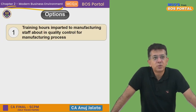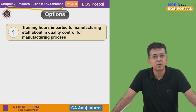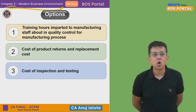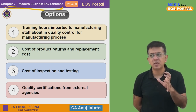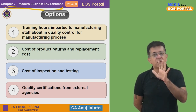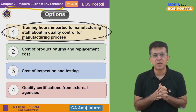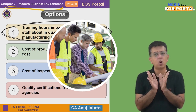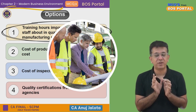Option 1: Training hours imparted to manufacturing staff about quality control for the manufacturing process. If you give training to your workers, your quality will improve — that is for sure. But it itself does not guarantee zero defectives. You might give training, and still the customer might reject the product because it may not be as per their specifications or quality perception. If you've done this chapter, this is something like preventive cost — it helps prevent quality issues, but it does not measure whether there are zero defective sale units.